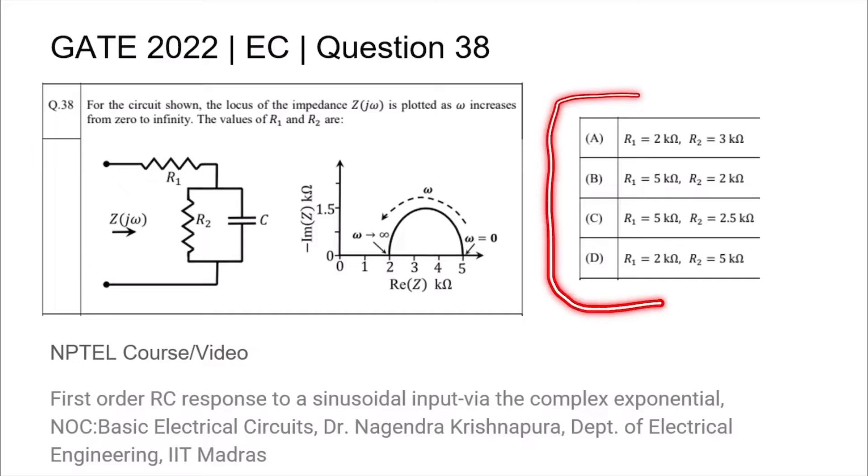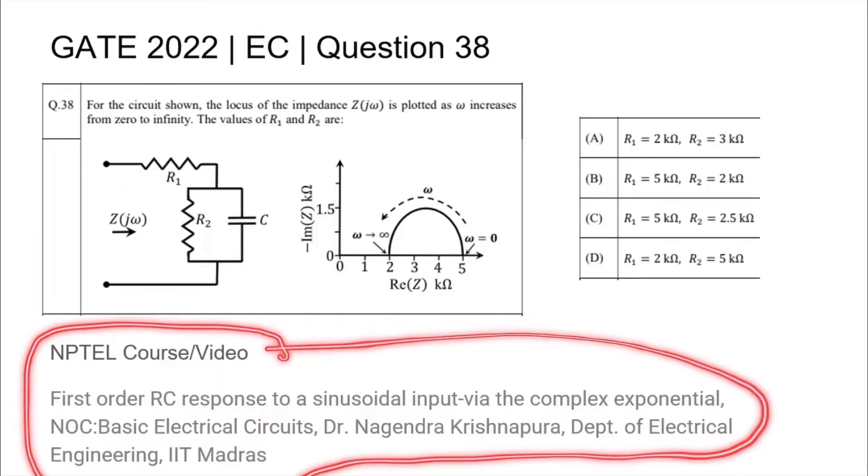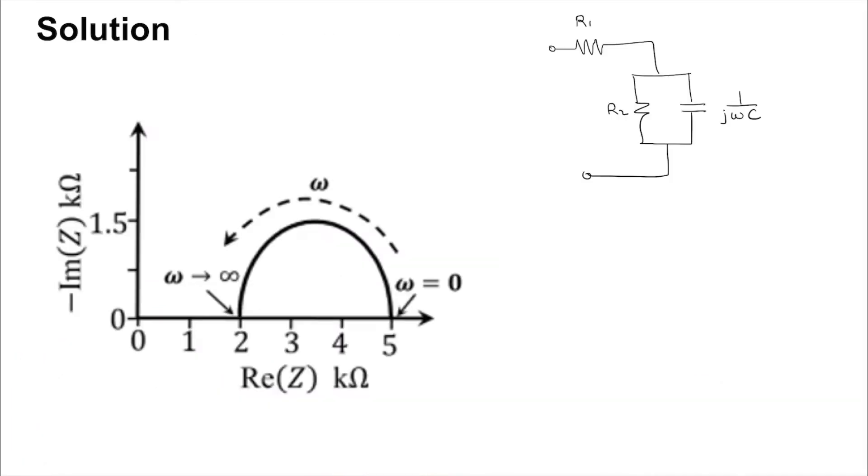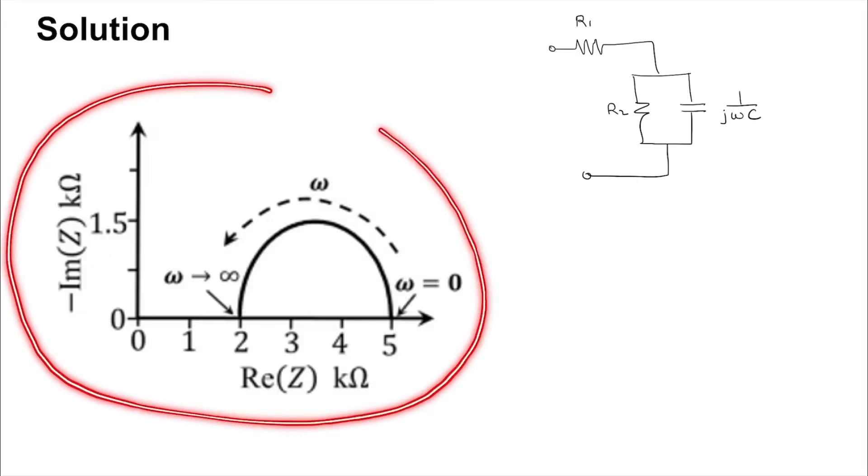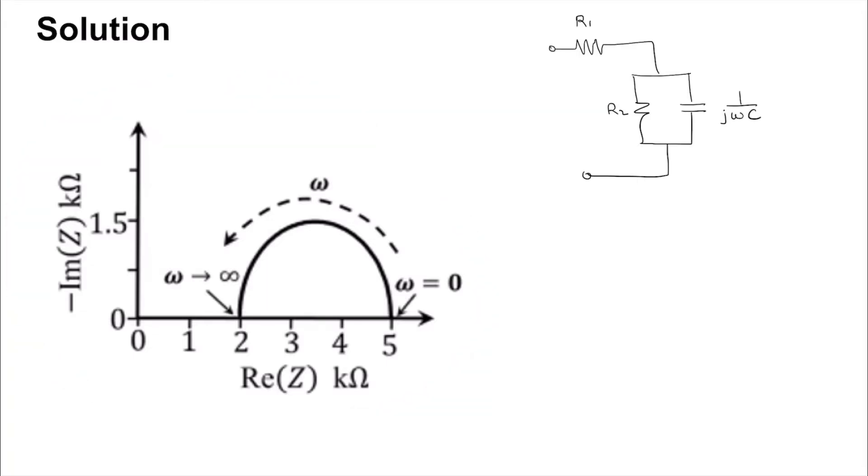We are asked to find out what R1 and R2 are among these options. Underneath the question you will find the title of the NPTEL course or video relevant to this topic. So we are given the following circuit where I have replaced the capacitor by its reactance.